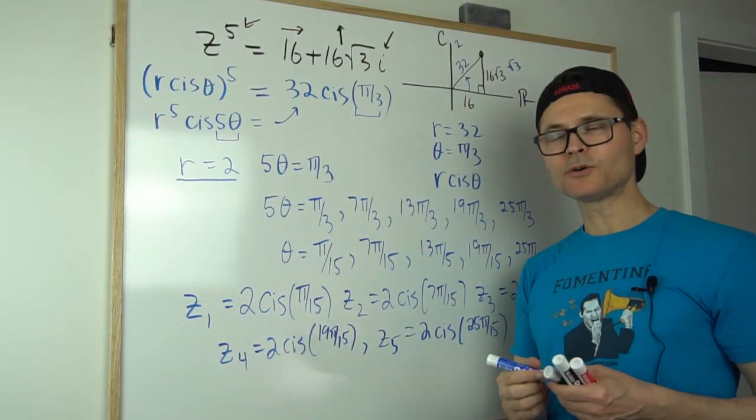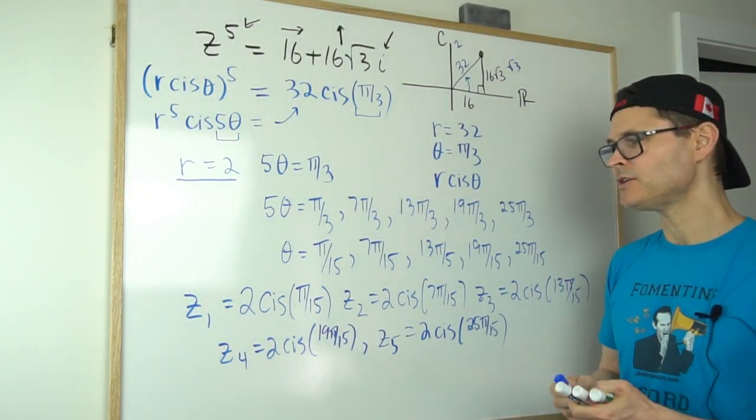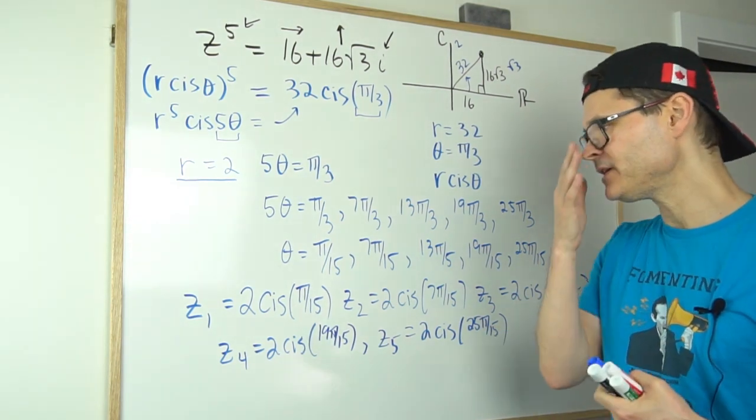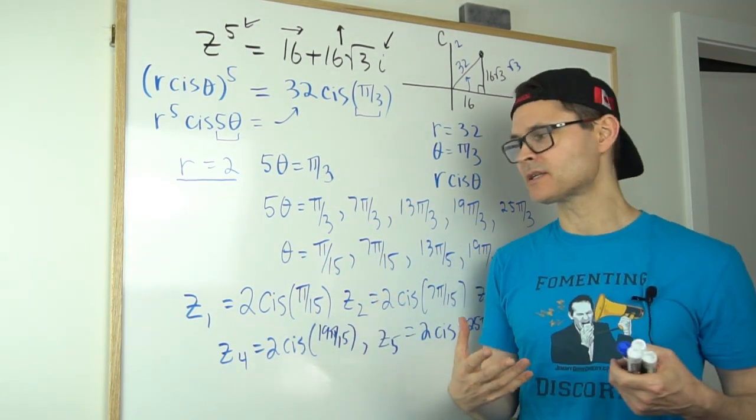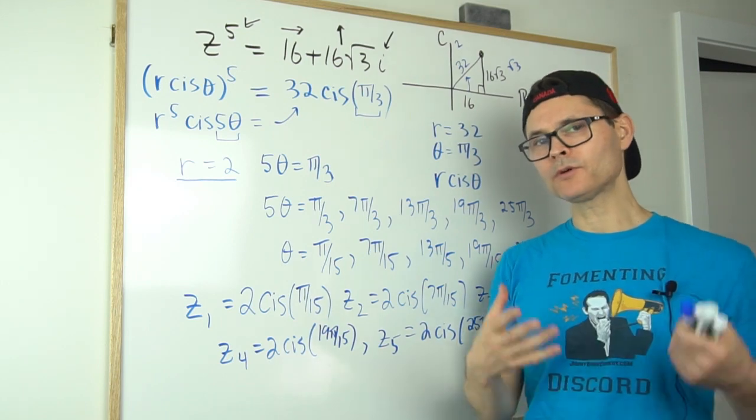And so through the miracle of editing, those are all five answers. Now they look unusual, but these do represent numbers. They're complex numbers. They're written in polar form.